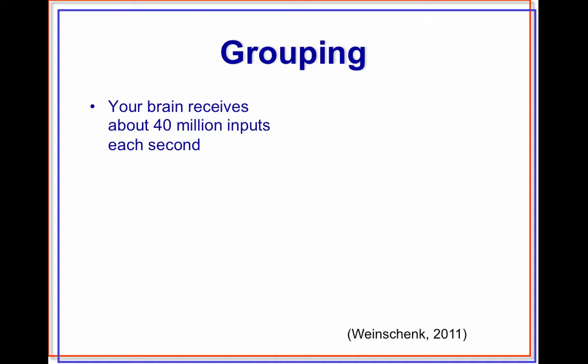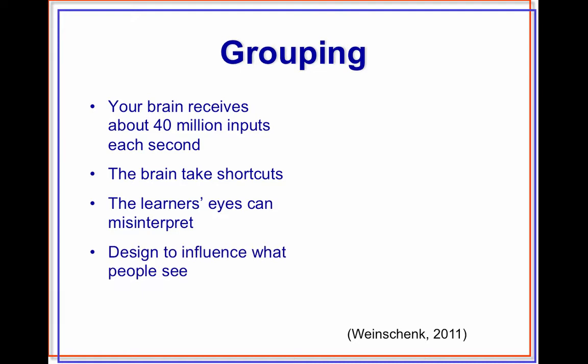Grouping is another idea. Your brain receives about 40 million inputs each second, so the brain takes shortcuts. The learner's eyes can misinterpret. So we design to influence what people see. We can use grouping, white space, and patterns to help make meaning for learners.